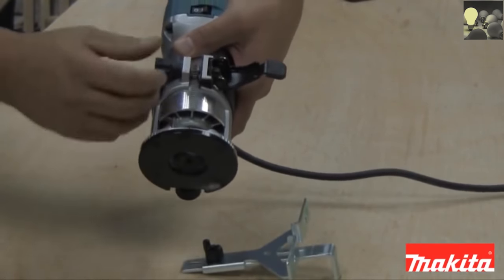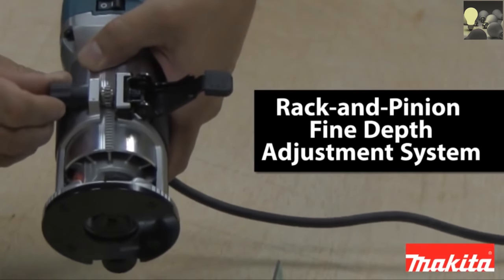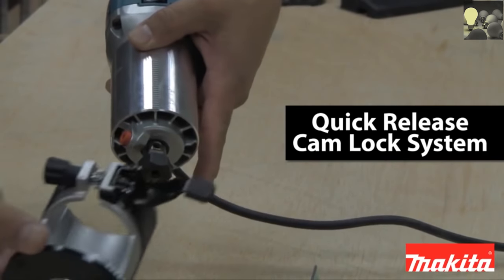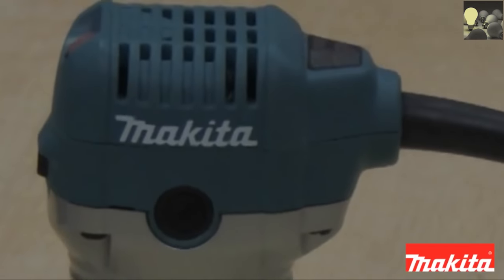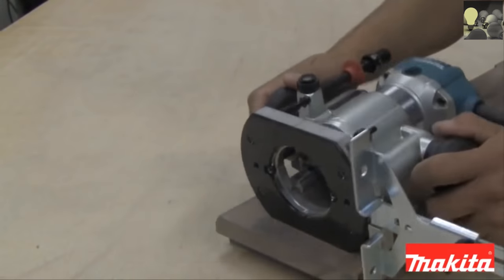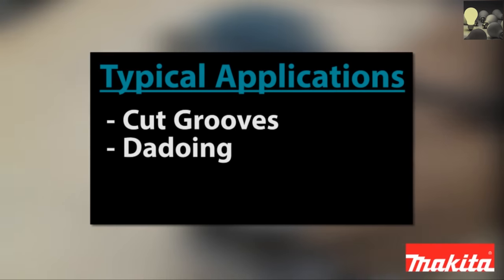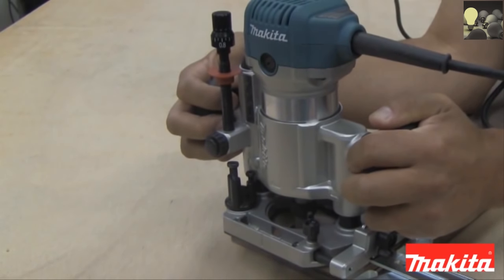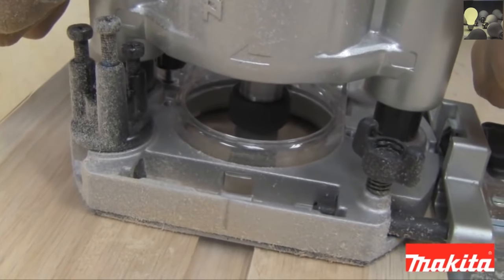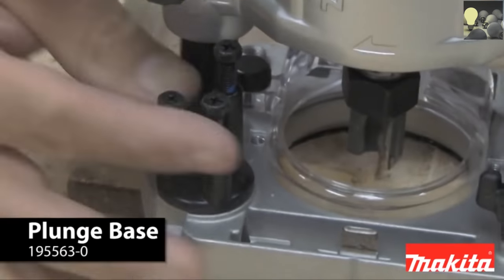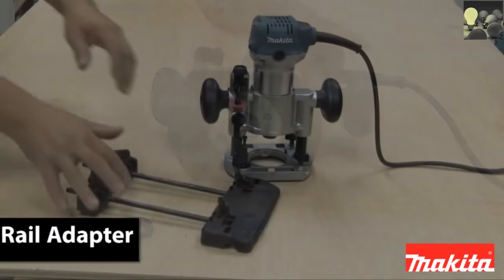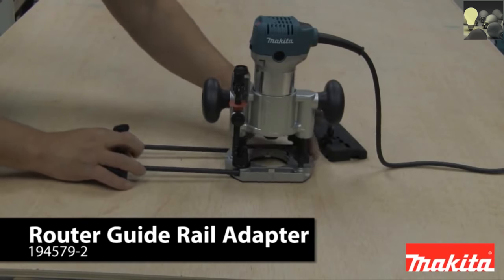Some of the features on the router include smooth rack and pinion depth adjustment system for more precise settings, quick release cam lock system for easy depth adjustments and base removal or installation, and a heavy duty aluminum housing engineered for increased durability. And it can also be used with a guide rail system for multiple applications.